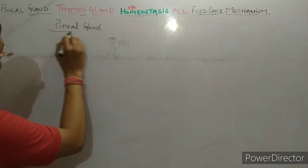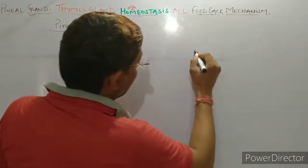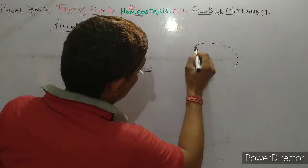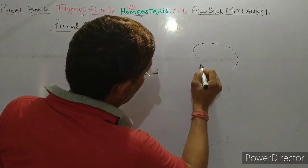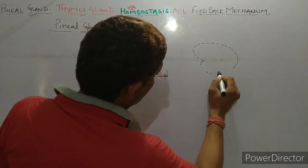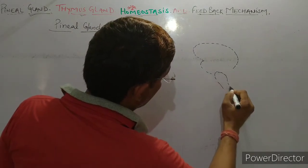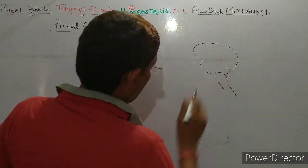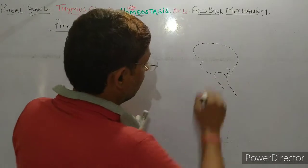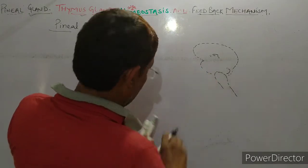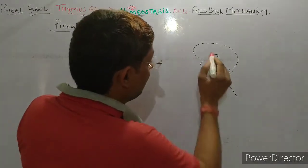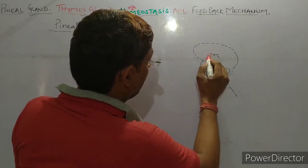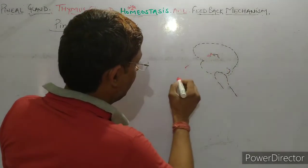Pineal gland is located in between two cerebral hemispheres in the brain. उनके बीच में यह located होती है pineal gland.